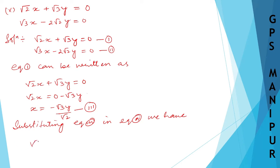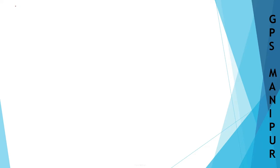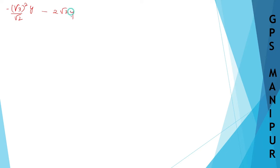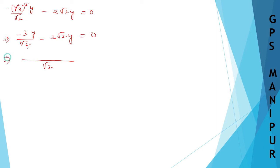Substituting equation 3 into equation 2, we have: root 3 into (minus root 3y divided by root 2) minus 2 root 2y equals 0. Root 3 times root 3 gives root 3 squared, so this becomes minus root 3 squared y divided by root 2, minus 2 root 2y equals 0. Now take root 2 as the common denominator and write minus 3y as it is.